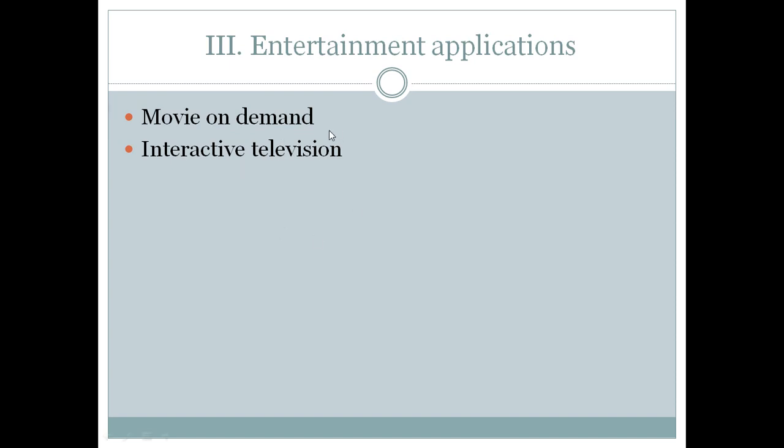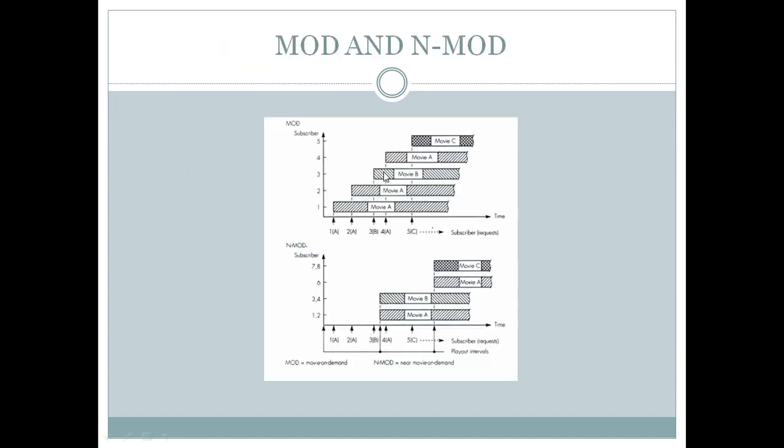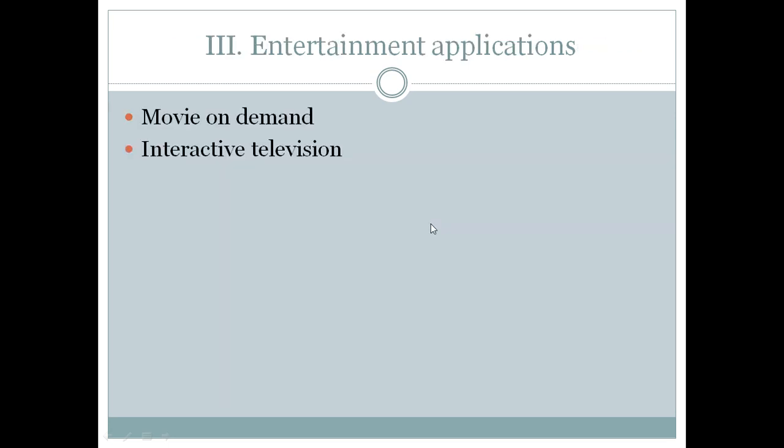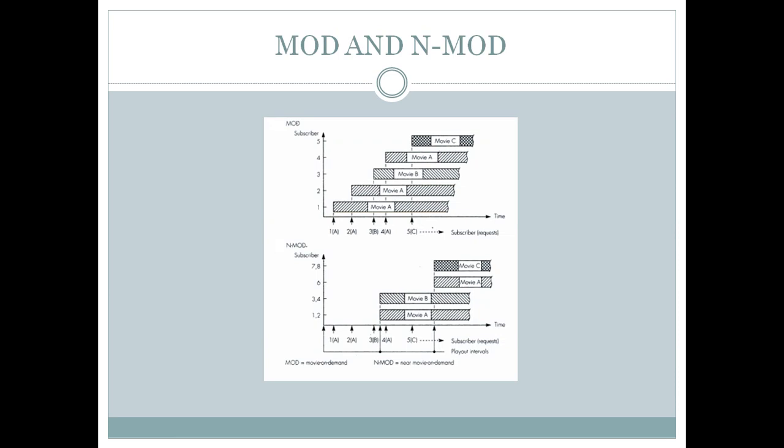Next we have the entertainment applications. In entertainment applications we have movie on demand and interactive television. As you can see, movie on demand, you will just contact the server depending which movie or video you want, the server will respond you back with that particular movie or video. That is, for the requesting thing, that is when you are requesting I want this particular video to be played, we will use the low bit rate interactive channel, and as the server is responding back to you with the video, as the video is of higher data, we will be using high bit rate channel. And interactive television, when your television at home can be used for some entertainment or some shopping applications and the rest of the thing. And this is the time scale diagram of the MOD or N-MOD, where the n number of requests for the same movie are served at the very same particular time, as you can see here.